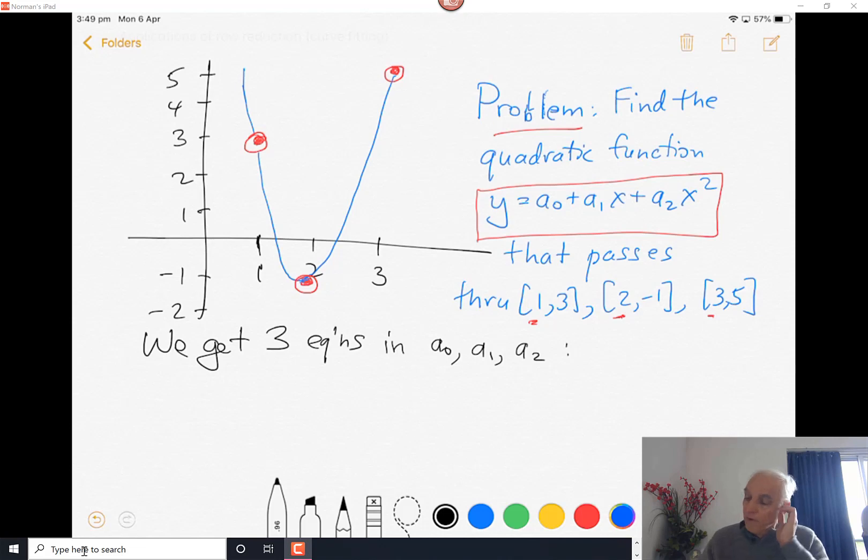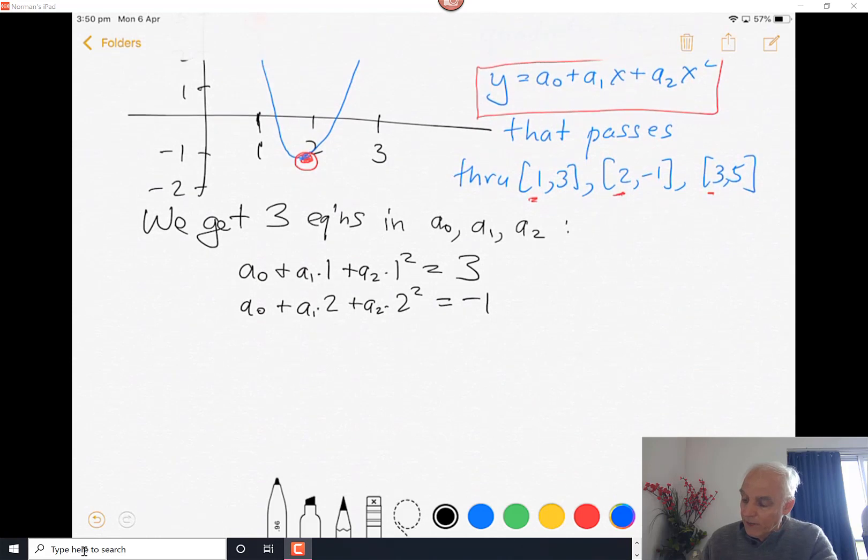What are these equations? Well, the first one is that if we plug in x equals 1 we should get 3. So that's a0 plus a1 times 1 plus a2 times 1 squared equals 3. Then when we plug in x equals 2 we get a0 plus a1 times 2 plus a2 times 2 squared equals minus 1. And finally if we plug in x equals 3 we get a0 plus a1 times 3 plus a2 times 3 squared equals 5.